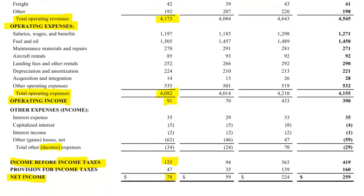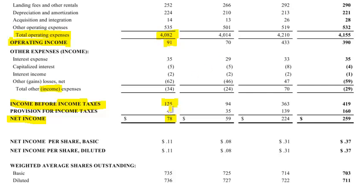The airline then sets aside money to pay taxes — a provision of $47 million. So from pre-tax income of $125 million, subtract $47 million for taxes, and you get net income for the quarter of $78 million. That's the bottom line — their earnings for the quarter. If you hear in financial media that Southwest Airlines earned $78 million in the quarter, that's exactly what they're referring to: net income.